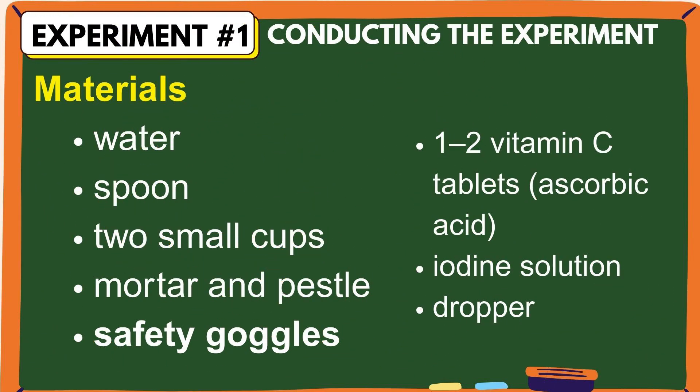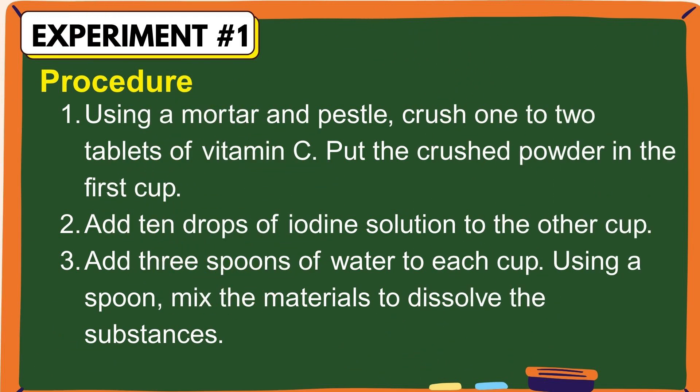These are the materials we'll need for experiment number one. Here are the procedures: 1. Using a mortar and pestle, crush 1 to 2 tablets of vitamin C. Put the crushed powder in the first cup. 2. Add 10 drops of iodine solution to the other cup. 3. Add 3 spoons of water to each cup. 4. Using a spoon, mix the materials to dissolve the substances.